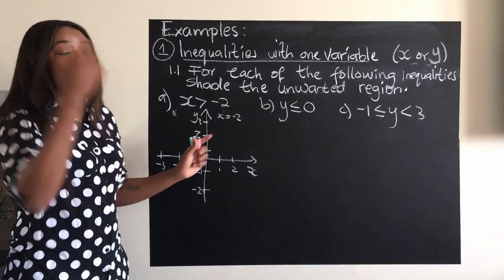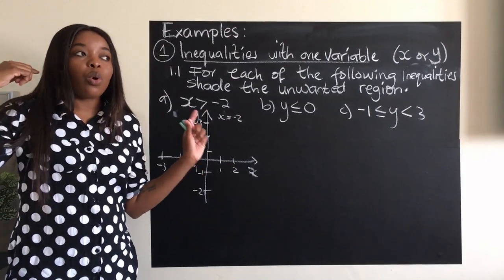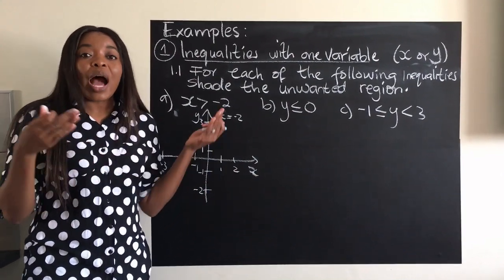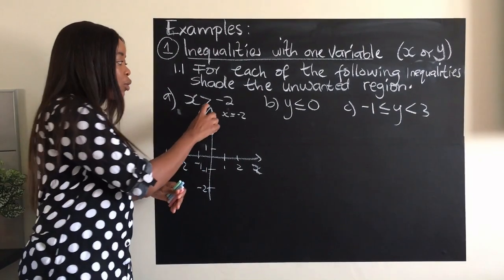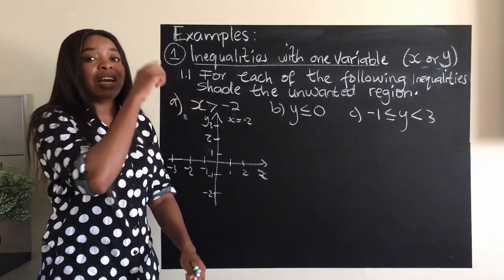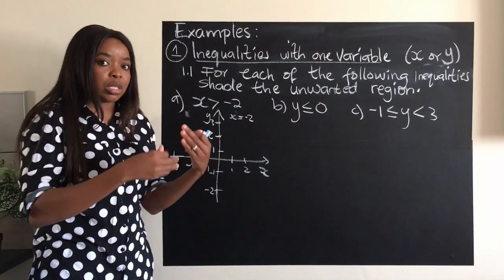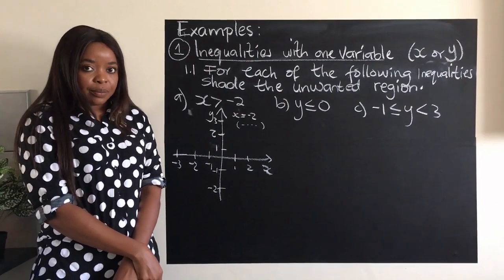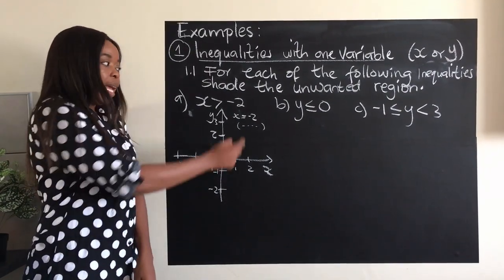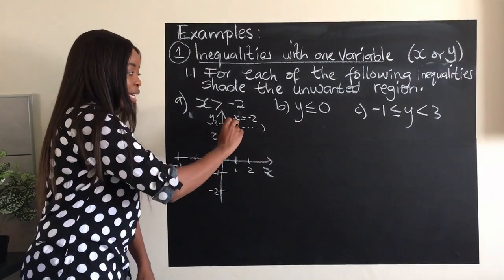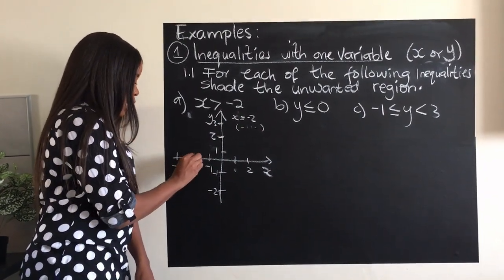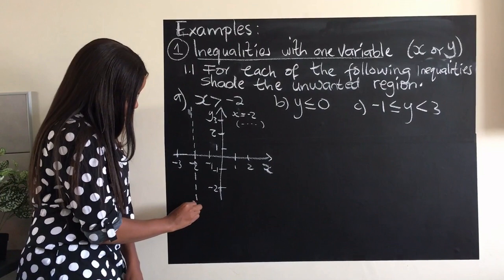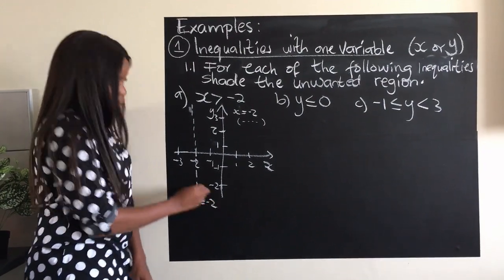Take note: am I going to use a broken line or a straight line? I look at my symbol and I see it is strictly greater — meaning it is strict — so I must use a broken line. Where am I going to put that broken line? At x equals negative 2. So I go to my x-axis, go to negative 2, and draw my broken line there. This line is x equals negative 2.